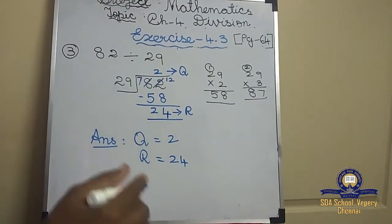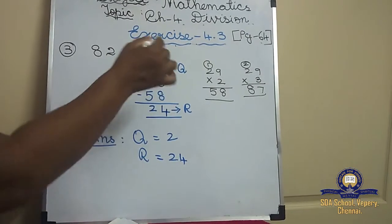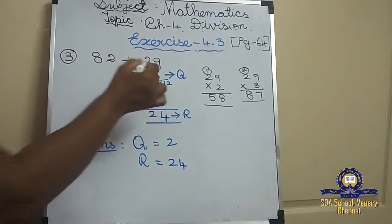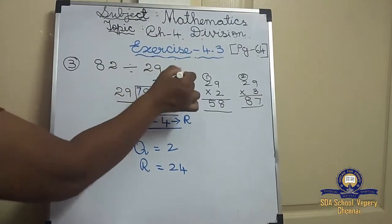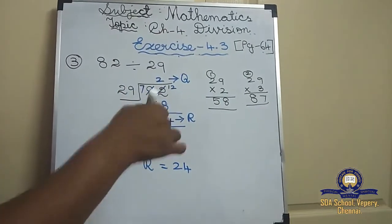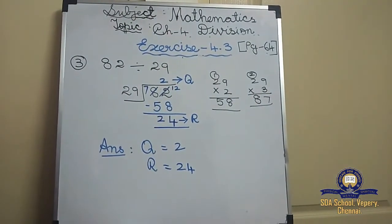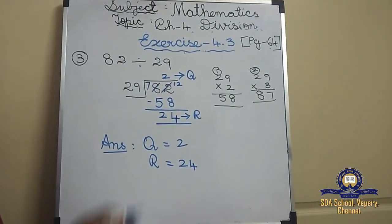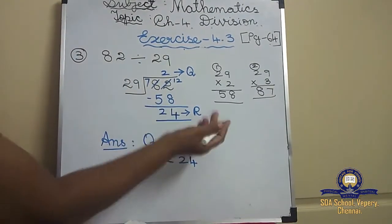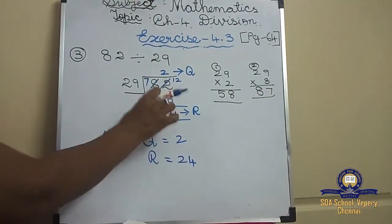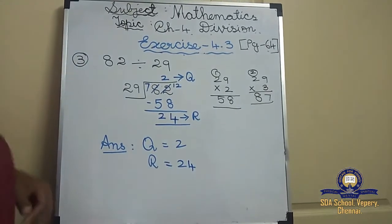We still haven't learnt division with a decimal point — that will come later in the book. If the remainder is a larger number, no need to worry; you can write it like this. The answer: quotient is 2 and remainder is 24.